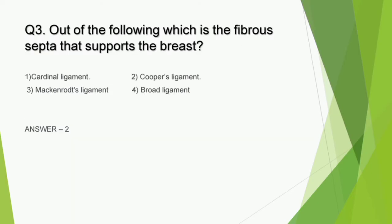Question number 3: Out of the following, which is the fibrous septa that supports the breast? Options are Cardinal ligament, Cooper's ligament, McEnrod's ligament, Broad ligament. The correct answer is option 2, Cooper's ligament. When we look into the other 3 options, these 3 are related to uterus, so by elimination method also we can pick up the correct option - Cooper's ligament.